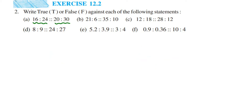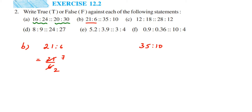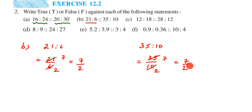In the second question, we have 21 is to 6 and 35 is to 10. Converting to fraction: 21 by 6 — cancel in the three table: three sevens are 21, three twos are six — gives us 7 by 2, which cannot be cancelled further. For 35 by 10 — cancel in the five table: five sevens are 35, five twos are 10 — also gives us 7 by 2. Both ratios are equal, so the answer is TRUE — they are in proportion.